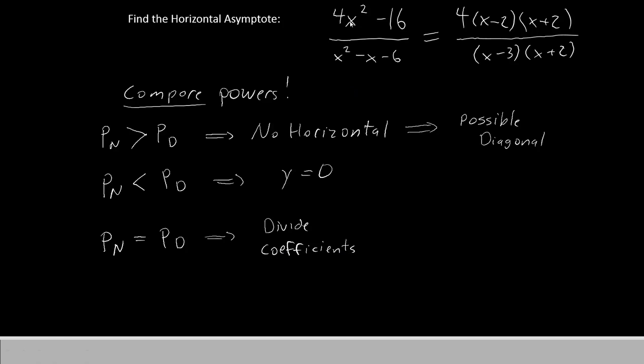In our case, we can see that the powers are exactly the same, x squared over x squared. So, we'll just divide the coefficients. We've got four on the numerator, and it looks like one on the denominator. So we'll say that our horizontal asymptote will be at y equals four.